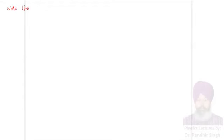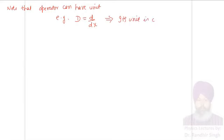Note that operators can have units. For example, capital D which I wrote in the previous slide, it was d by dx. So, its unit is centimeter inverse or meter inverse or in general it is length inverse.